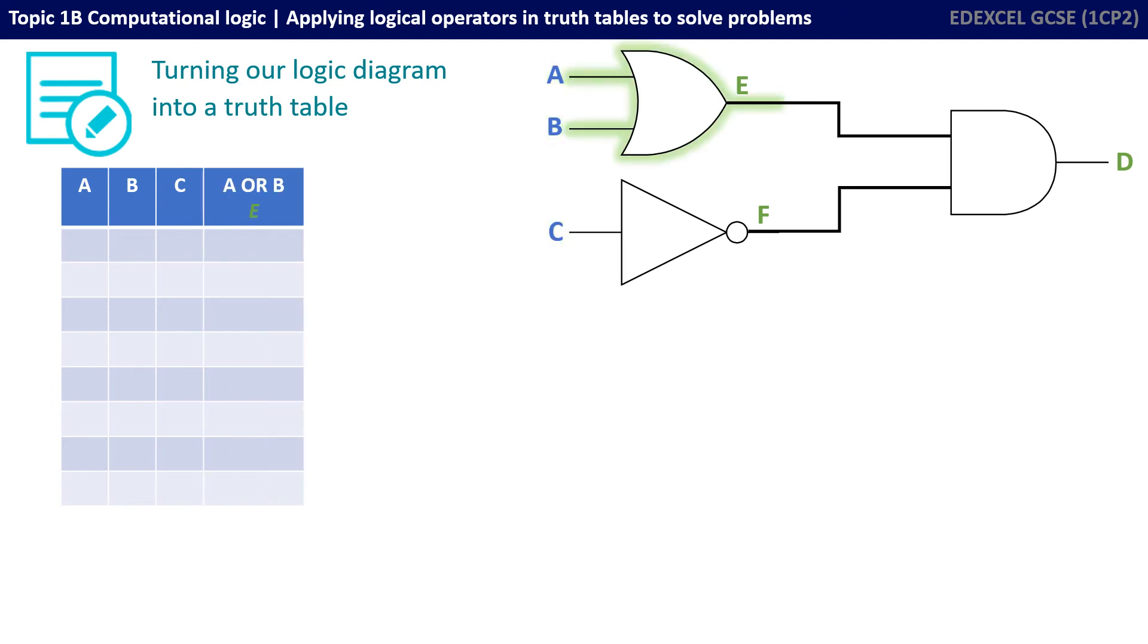We now need columns for our intermediary outputs and inputs. So, we've got the output of A or B and we're going to call that E. And, of course, that will end up being one of the inputs to our AND gate.